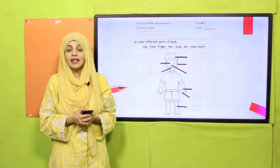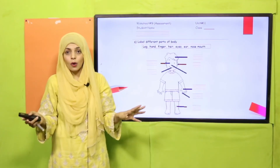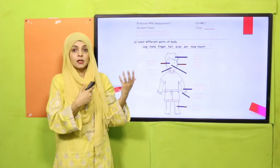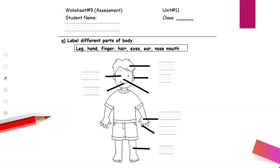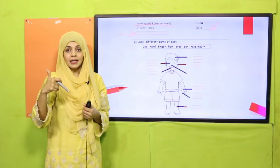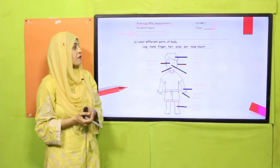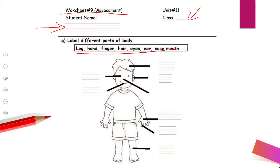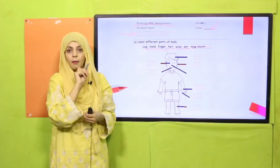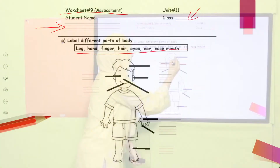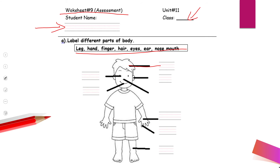For practice, I will provide you with an assessment sheet — you will do it yourself, I will just explain it. Worksheet Number 9 is an assessment. Write down your name and your class. Now label the different parts of the body — the parts are shown and you have to label them according to the markings. Pause the video and finish it.